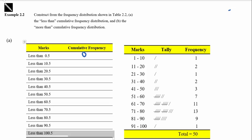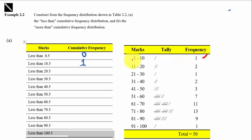Next, we count how many students score less than 10.5 marks. We know that there is only 1 student between 1 to 10 marks, and 2 students between 11 to 20 marks. So there is only 1 student scoring less than 10.5 marks. Then, how many students score less than 20.5 marks? There is 1 student between 1 to 10, and 2 students between 11 and 20, so altogether 3 students score less than 20.5 marks.